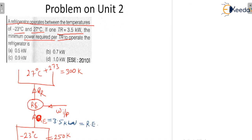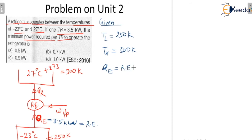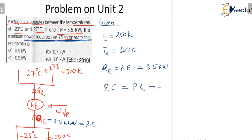In this question, the given values are: TL equals 250 Kelvin, TH equals 300 Kelvin, and QE — the refrigeration effect — equals 3.5 kilowatt. The examiner has asked for the minimum power required, which is directly proportional to work consumption, so we need to find the value of work input.